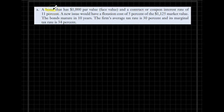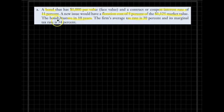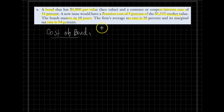In part A, we are issuing a bond to finance our operations. The bond has a $1,000 par value and pays a coupon interest of 11%. The flotation costs associated with issuing the bond are 5%, and the market value of the bond is $1,125. The bond matures in 10 years, and both the average and marginal tax rates are provided.